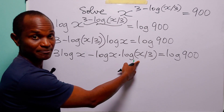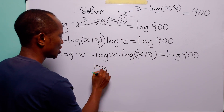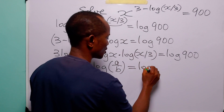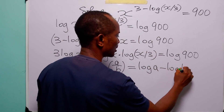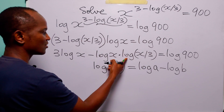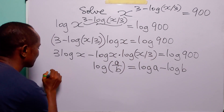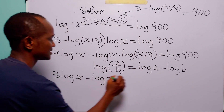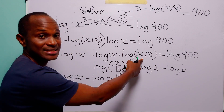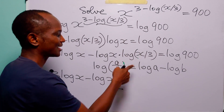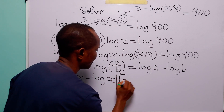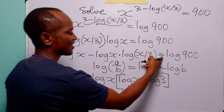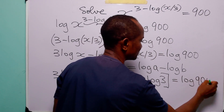Now let us remember that log(a/b) can also be written as log a minus log b. That means we can write this term as log x minus log 3. So the left hand side becomes 3 log x minus log x multiplied by (log x minus log 3), and everything is still equal to log 900.